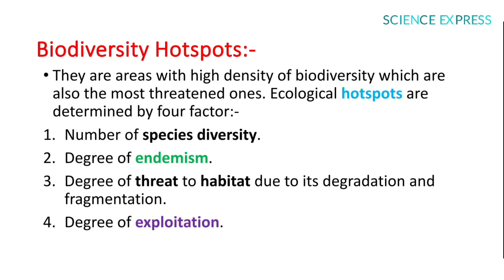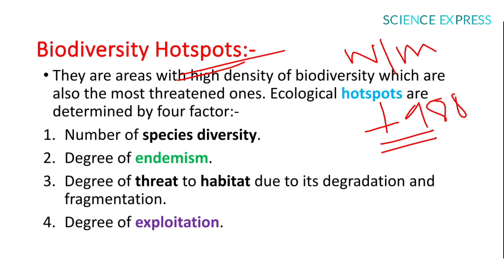The Hotspot concept was given by Norman Myers in 1988. Hotspots are areas with high density of biodiversity that are also the most threatened. Ecological hotspots are determined by four factors: number of species diversity, degree of endemism — meaning a species found in a single defined geographical location such as an island, territory, or zone. Endemism describes distribution, while endangered describes threats to population.